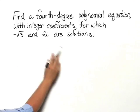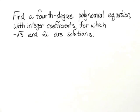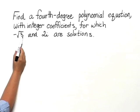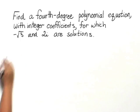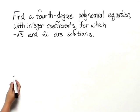Now when a polynomial equation has integer coefficients, that's numbers like 1, 2, 3, or negative 1, negative 2, negative 3. If negative square root of 3 is a solution, then positive square root of 3 must also be a solution, or the coefficients wouldn't be integers.